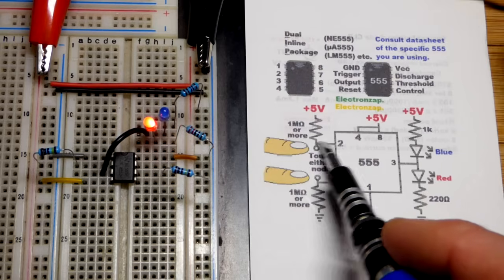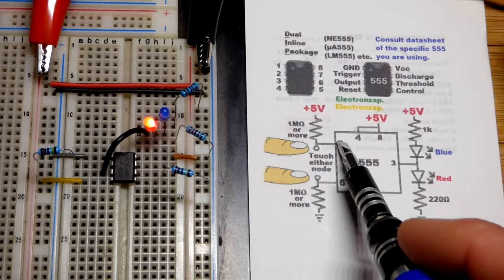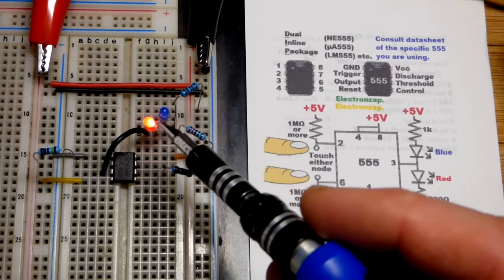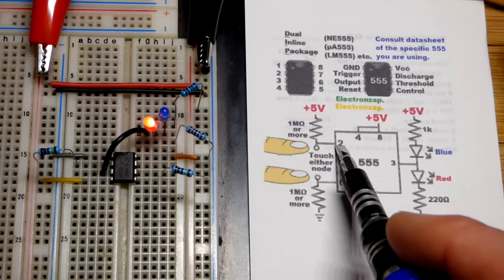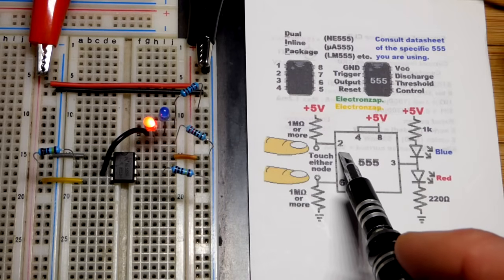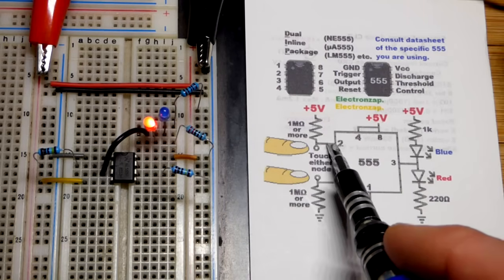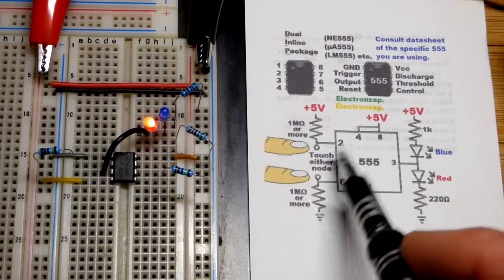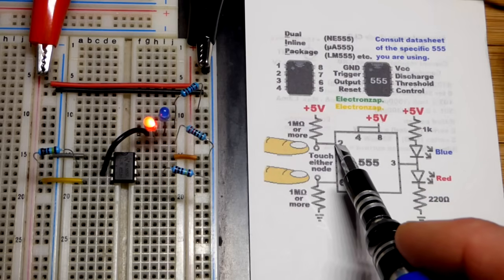It's able to get below one-third supply voltage briefly, but it's enough to set the output high. That's all pin 2 is waiting for, is a low enough voltage, less than a third of the supply voltage, five volts in this case.